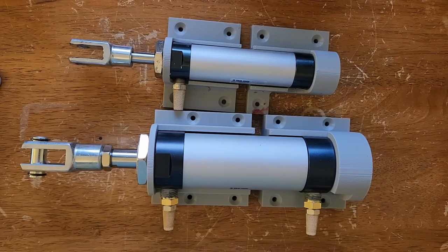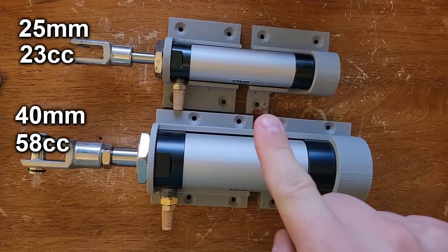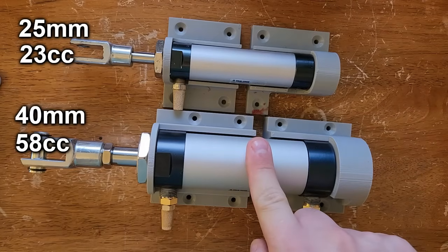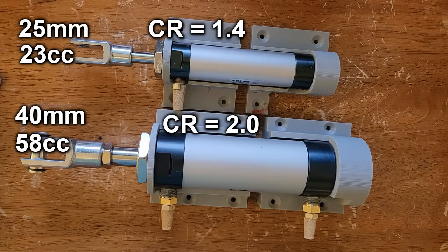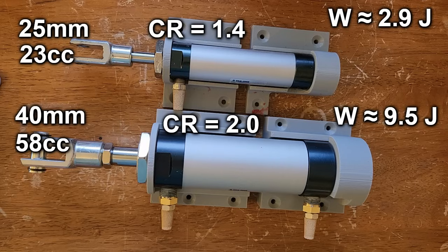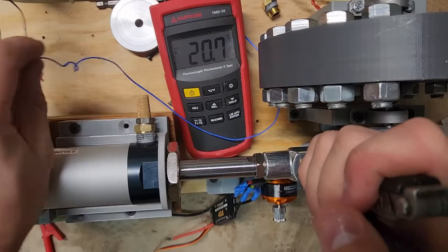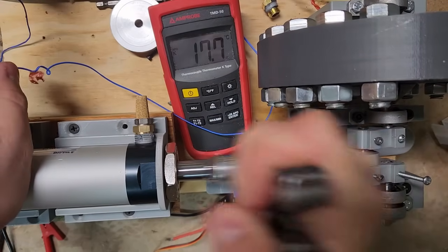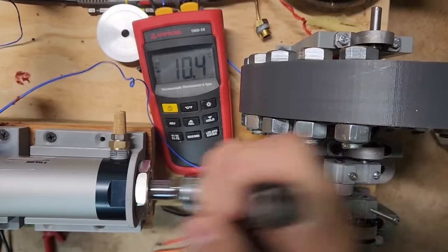Let's see what happens when I switch it out for the 40 millimeter. This should raise the swept volume from about 23cc to 58cc, which will raise the compression ratio from 1.4 to just over 2.0. Adiabatic compression work for the 25 millimeter piston was about 2.9 joules, whereas with the 40 millimeter piston it's about 9.5 joules. Also, the theoretical peak temperature of compression should go from 66°C to 118°C, making heat rejection a lot more efficient. Let's see what it does just by manually pumping the piston. Within a few seconds I'm able to get the temperature about 10 degrees below freezing. That seems pretty promising so far.